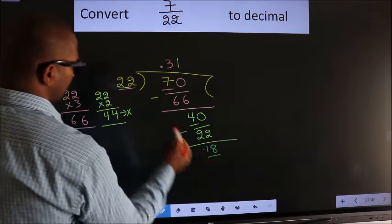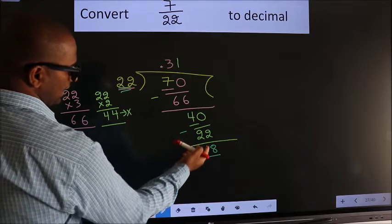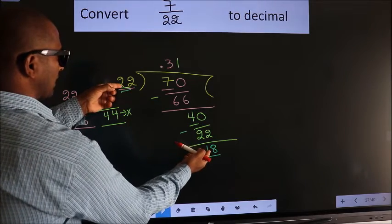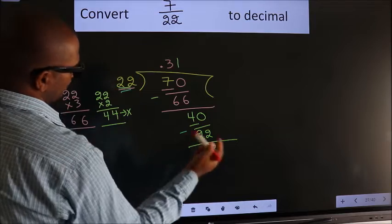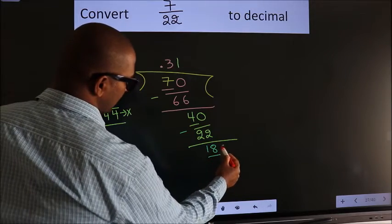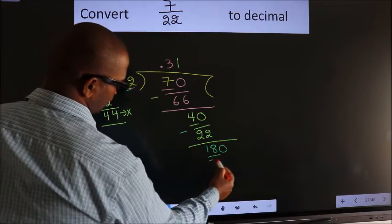Here we have 18. Here 22. 18 is smaller than 22. We already have the decimal. So we can directly take 0. So 180.